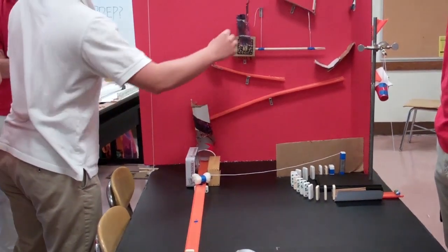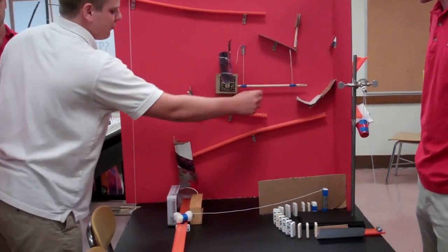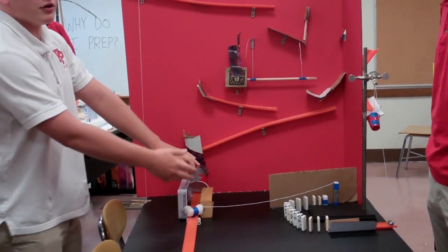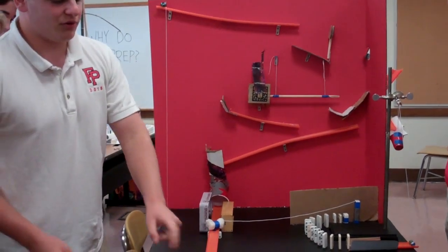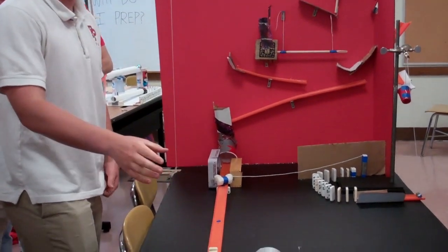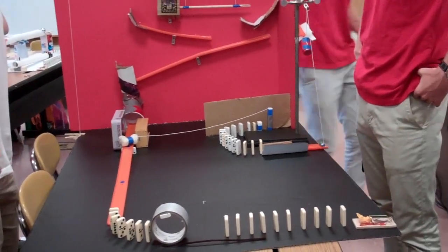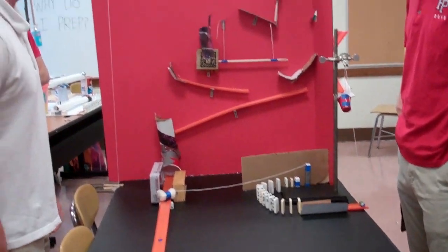And while it does that, this ping pong ball gets knocked down these two ramps, falls down this cup, and now goes down the cleared ramp and hits these dominoes here, hitting the tape roll which rolls and knocks the rest of the dominoes down to hit our mousetrap.